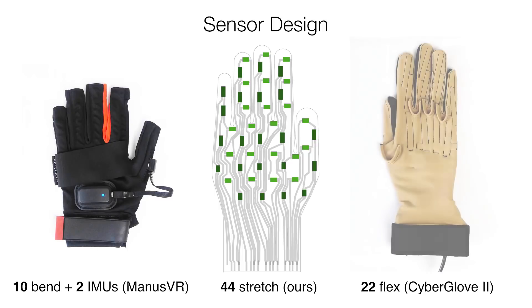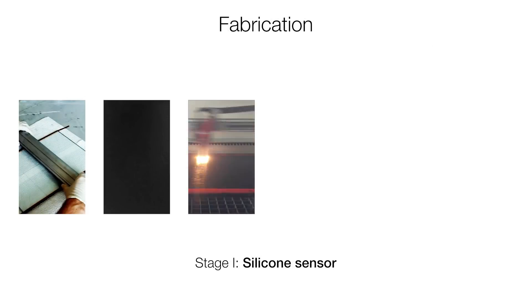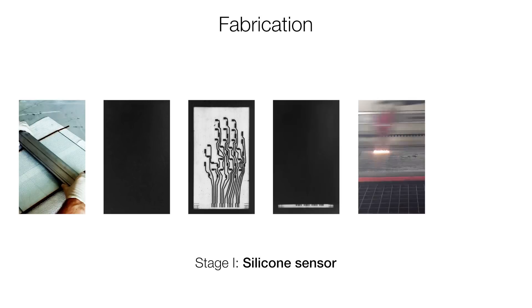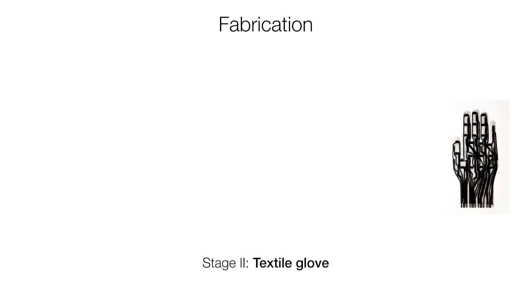Other data gloves use at most one sensor per degree of freedom. The sensor array is cast layer by layer. The conductive patterns are etched with a standard laser cutter. The resulting silicon sensor on its own is not wearable.